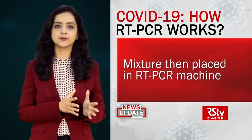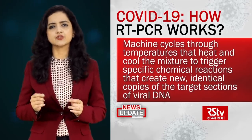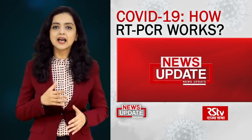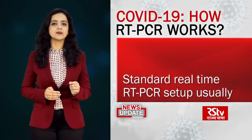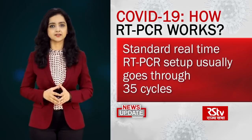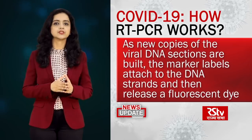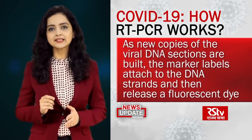The mixture is then placed in the RT-PCR machine. The machine cycles through temperatures that heat and cool the mixture to trigger specific chemical reactions that create new identical copies of the target sections of the viral DNA. The cycle repeats over and over to continue copying the target sections of the viral DNA. A standard real-time RT-PCR setup usually goes through 35 cycles, which means that by the end of the process, around 35 billion new copies of the sections of the viral DNA are created from each strand of the virus present in the sample. As new copies of the viral DNA sections are built, the marker labels attach to the DNA strands and then release a fluorescent dye, which is measured by the machine's computer and presented in real-time on the screen.